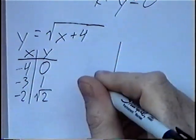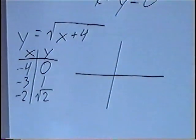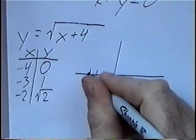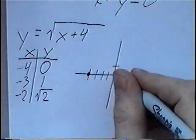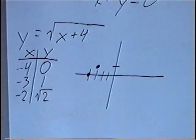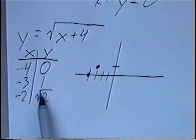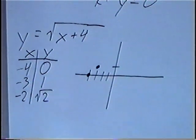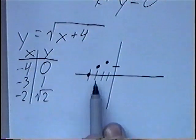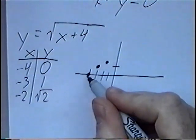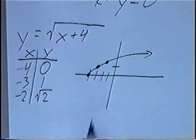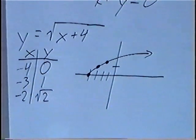Graphing these on an xy-axis, the first point is at negative 4, zero; the second point is at negative 3, 1; and the third is at negative 2, square root of 2. The square root of 2 would be a little bit above 1. If you wanted to, you could do more points, but the shape will be a sideways parabola without the bottom part of the parabola.